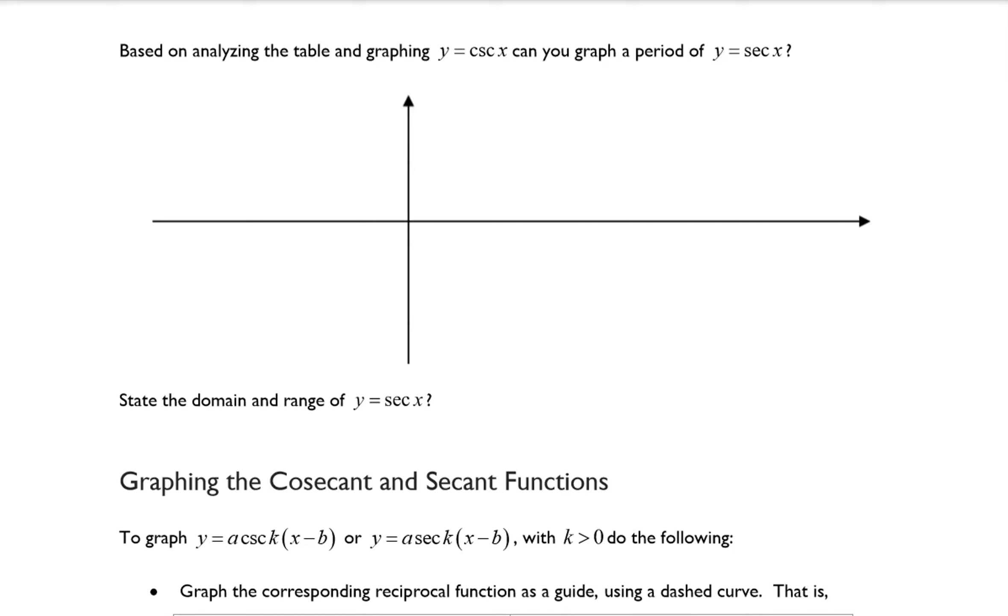So recall that the way that we graphed cosecant of x was that we started off with sine as our foundation. So for y equals secant of x, we're going to start off with y equals cosine of x and then use that as our foundation.